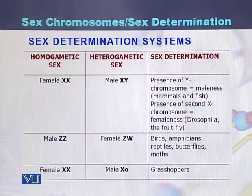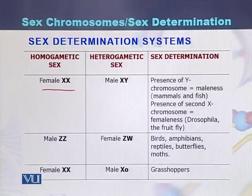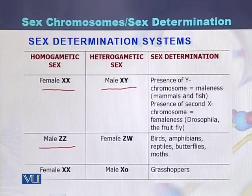There are three most common sex determination systems. The first is the example of humans, where the female is XX and the male is XY. The second system is found in birds, amphibians, and reptiles, where the male is homogametic and produces Z and Z chromosomes, while the female has Z and W chromosomes.